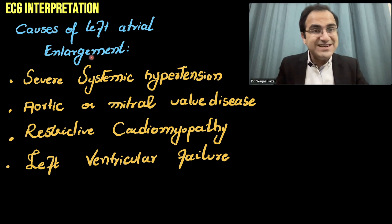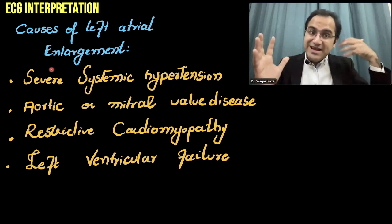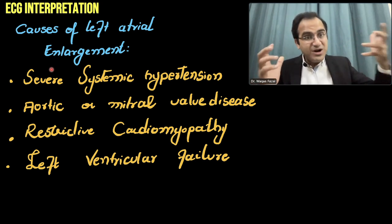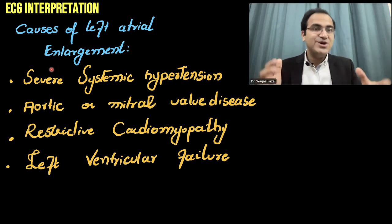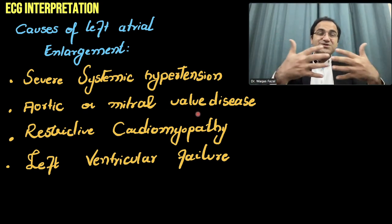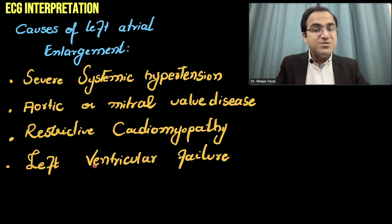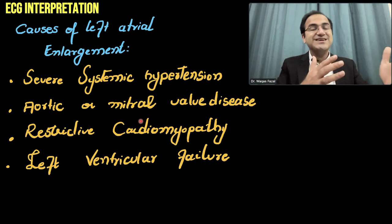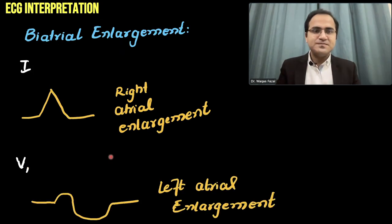Coming to the causes of left atrial enlargement — the causes are related to afterload. In hypertension, there is increased afterload and high blood pressure, so the atria has to contract more to push blood to the vessels, resulting in left atrial enlargement. Aortic or mitral valve disease, mitral valve stenosis, restrictive cardiomyopathy, and left ventricular failure are the causes of left atrial enlargement, and they result in P mitrale and biphasic P waves in V1.